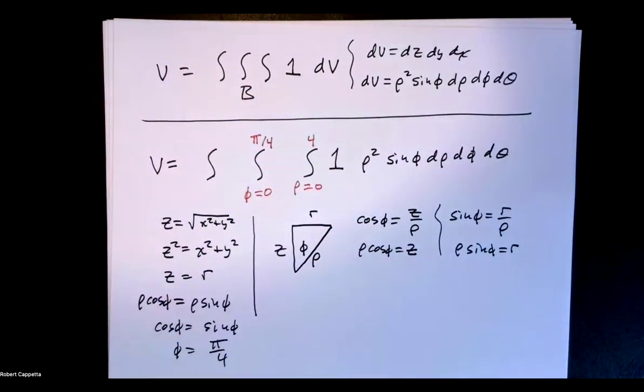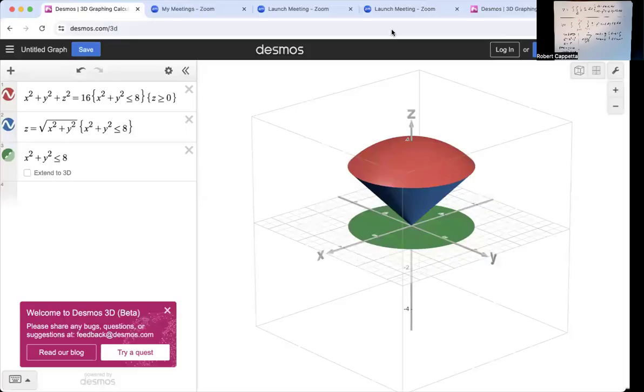Now we need to talk about theta. What does theta range from? So again, let's look at our picture to try to determine our values for theta. Our metaphor is longitude, but we see this goes all the way around. We don't have just a fraction of this piece, we have the full 2 pi radians. So theta is ranging from 0 to 2 pi.